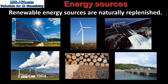Solar power uses the energy from the sun and converts it to electrical energy. A wind turbine uses the kinetic energy of the wind and converts it to electrical energy. In a hydroelectric power station, the gravitational potential energy of the water behind the dam is converted to electrical energy.